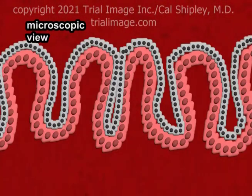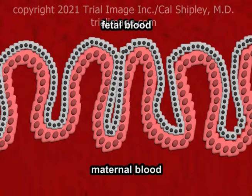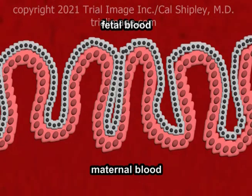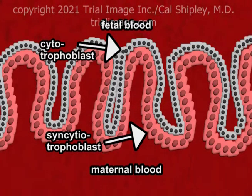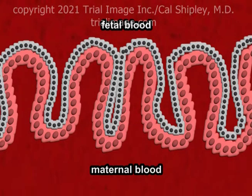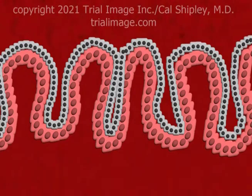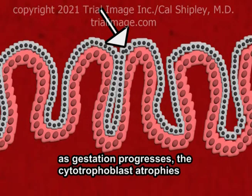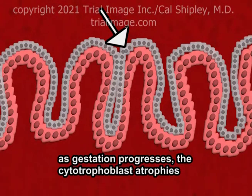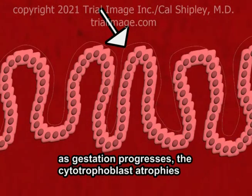Viewing one of the placental villi on a microscopic level, we see the maternal and fetal blood separated by the trophoblast cell layer. Throughout most of the period of fetal gestation, the trophoblast consists of two cell layers: the outer syncytiotrophoblast, which is in direct contact with the maternal blood, and the cytotrophoblast layer, which is in contact with the endothelium of the fetal capillaries. As the gestation progresses, the cytotrophoblast atrophies so that at full term there is just a single layer of cells separating the maternal blood and the fetal capillary endothelium.